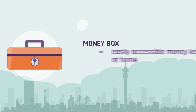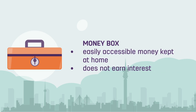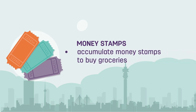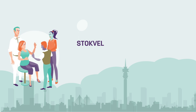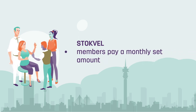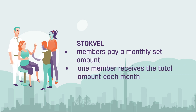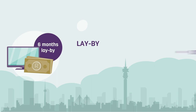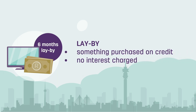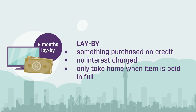Other ways include a money box, where money is kept at home and doesn't earn interest, or money stamps which can be collected and used to buy groceries. The stokvel, a proudly South African way to save, allows members of the stokvel or savings group to pay a set amount every month. Some stokvels have one member receiving the total amount contributed, while others distribute the money after a long period or use it to buy items that members need. There's also the option of lay-by, where you purchase something on credit without interest but can only take the item home once you've paid for it in full.